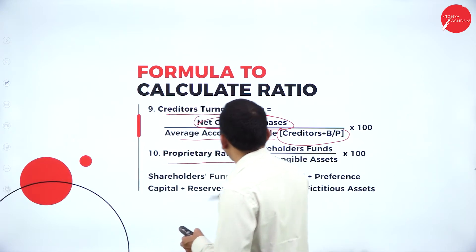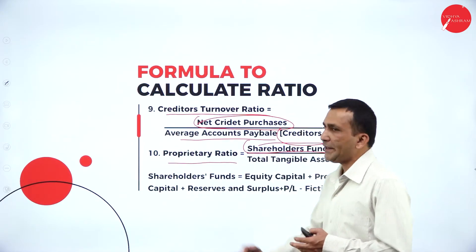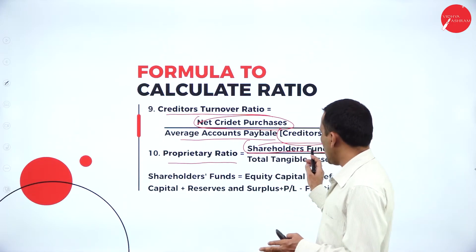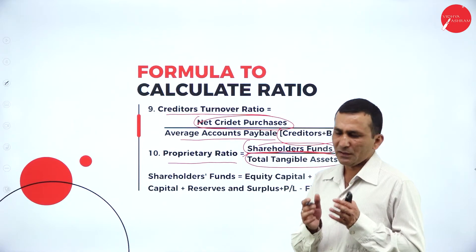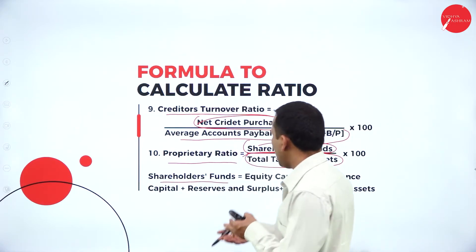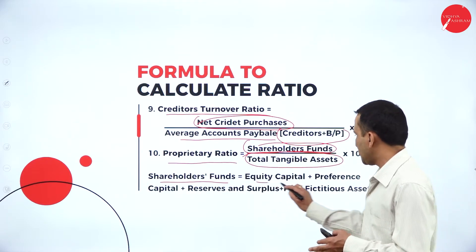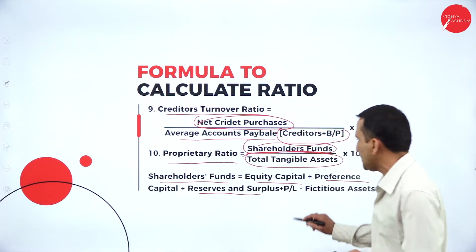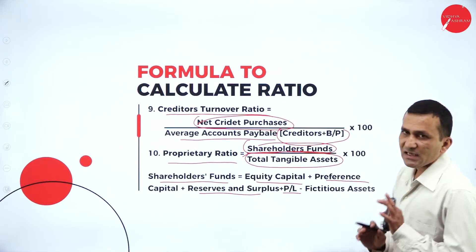Moving to proprietary ratio. The proprietor is the real owner of the company. The formula is shareholders' fund divided by total tangible assets available in the business. Shareholders' fund is equity shares plus preference shares plus reserves and surplus plus P&L account minus fictitious assets.